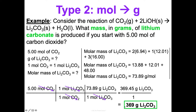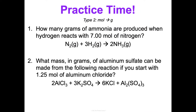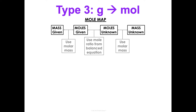Multiply across the top, multiply across the bottom, divide, and you get 369 grams of lithium carbonate — rounded to three sig figs because I started with three sig figs. This is just taking it one step further — now we have a two-step problem. Practice that, and then let's move on to type three.